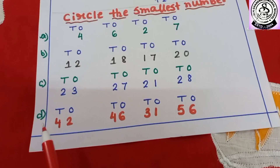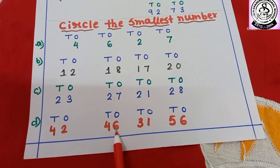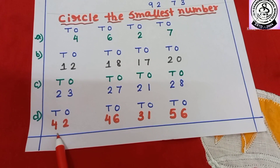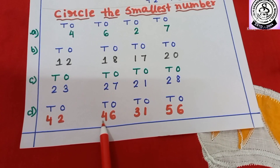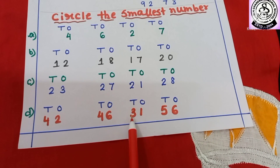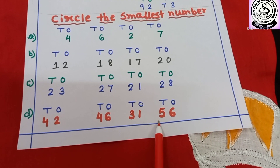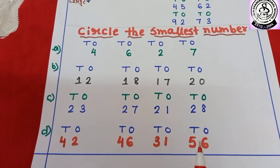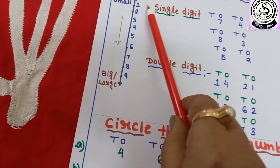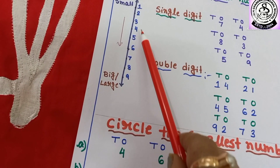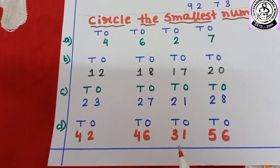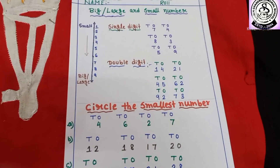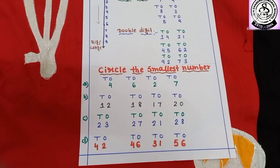Number D: I have written 42, 46, 31 and 56. First digit is 4, here also 4, here also 4. But here first digit is 3 and here 5. Counting: 1, 2, 3, 4, 5 — that means 5 is the largest. Then 1, 2, 3, 4 — that means 3 is smallest, so 31 is the smallest number. I hope you all have enjoyed this session.